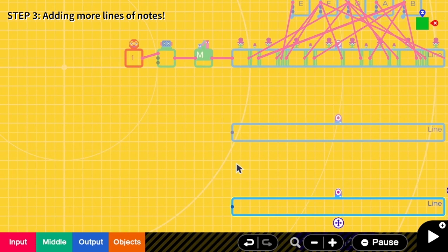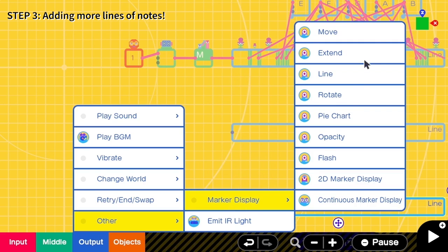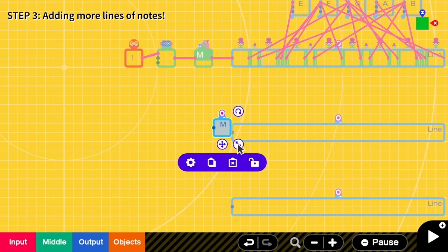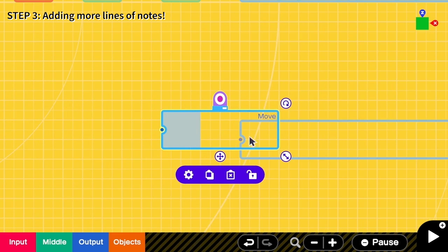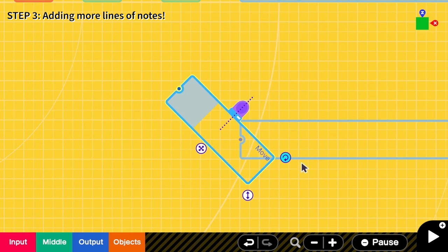And then I need another marker nodon to control which line I'm reading. So I go to output, other, marker display, and move. Then I expand this to make sure that it can fit three squares and let me rotate it.